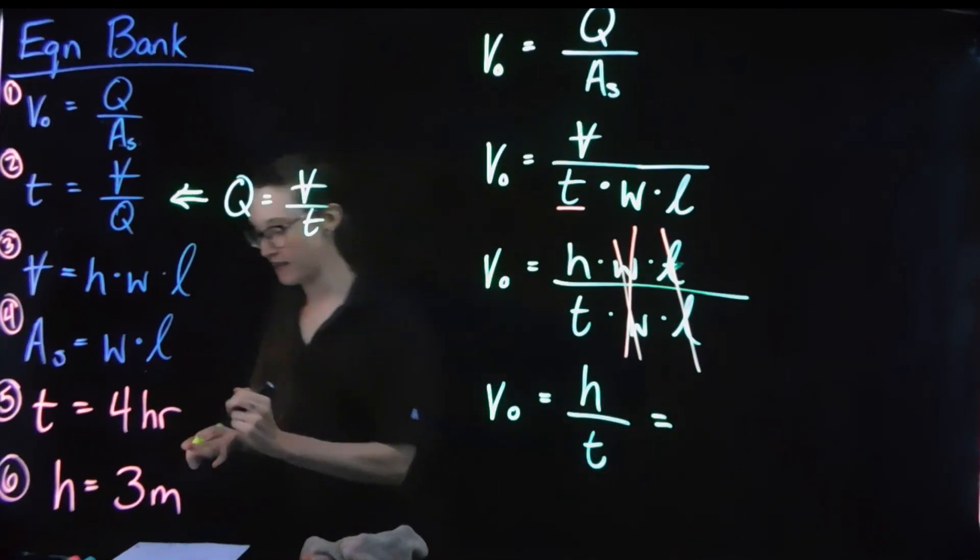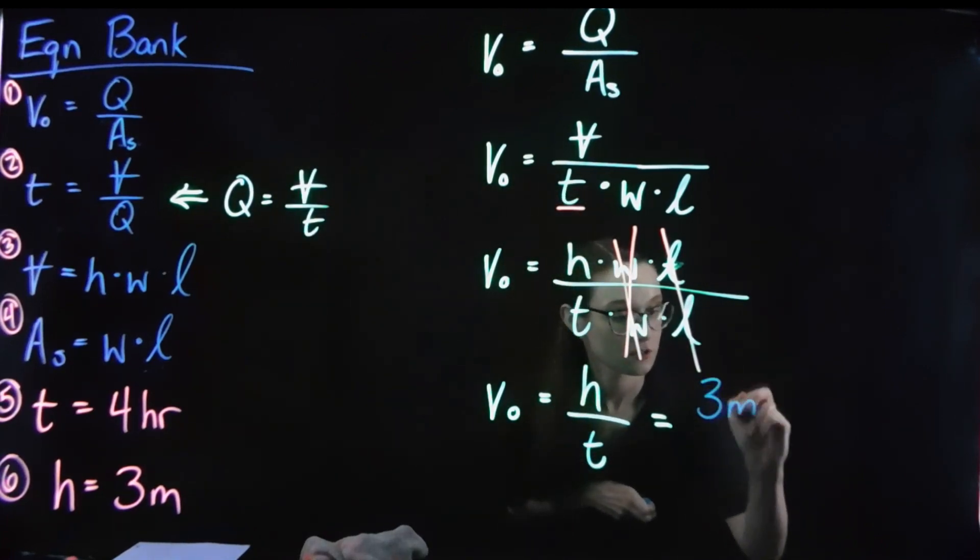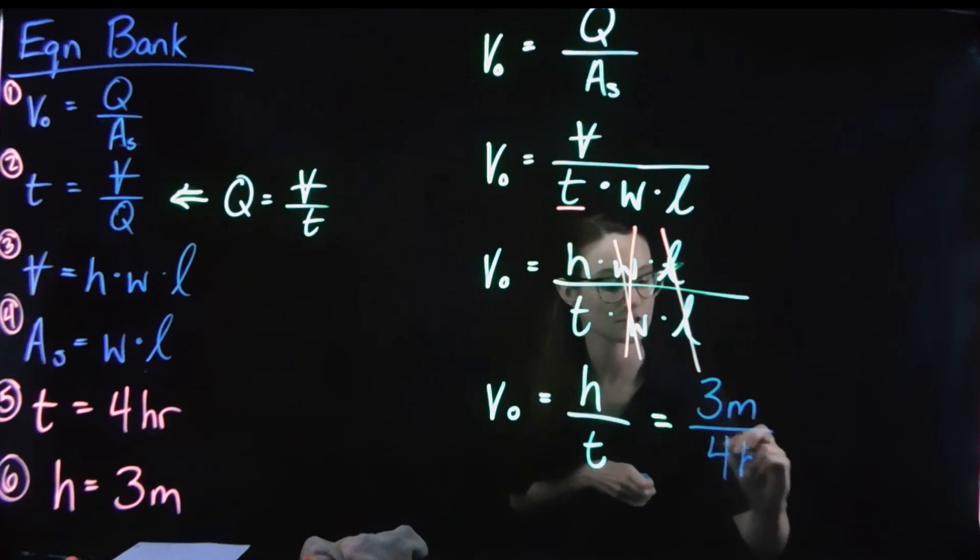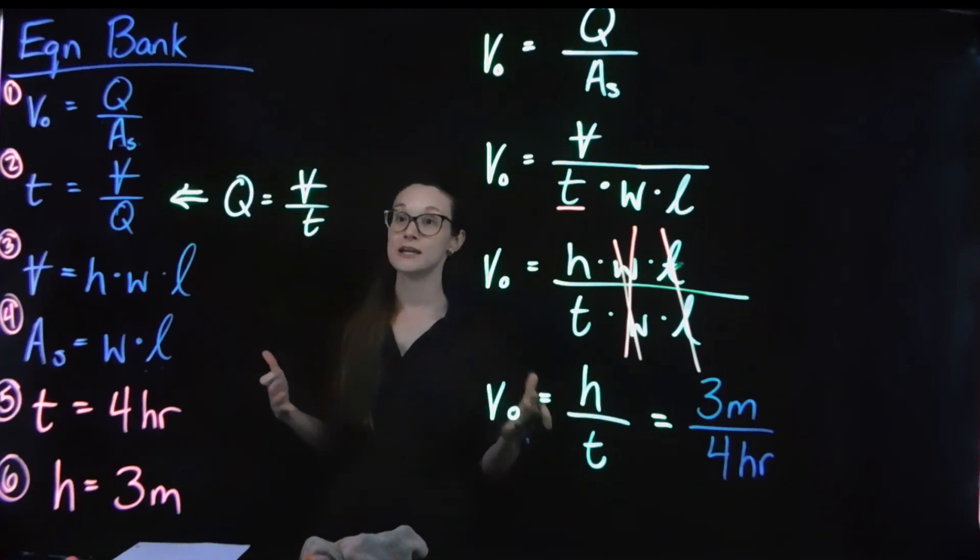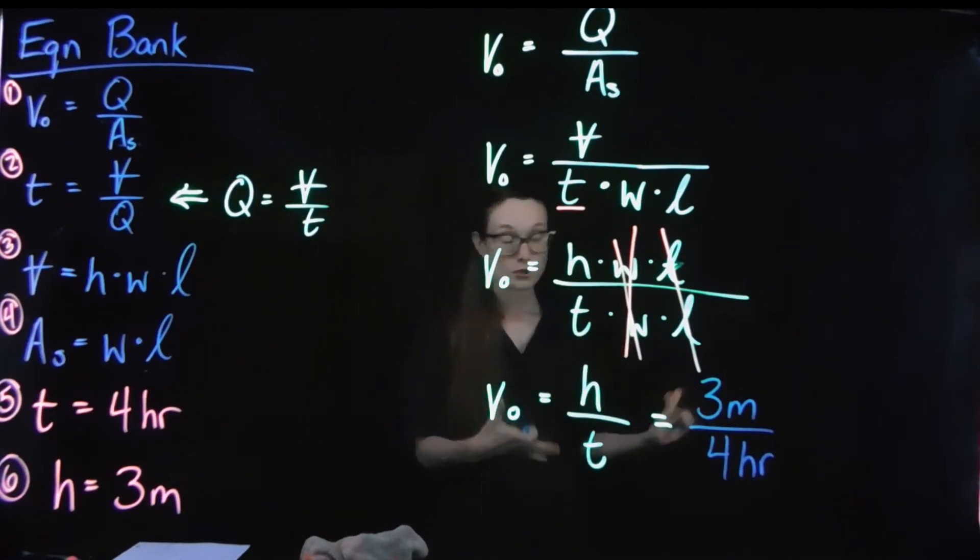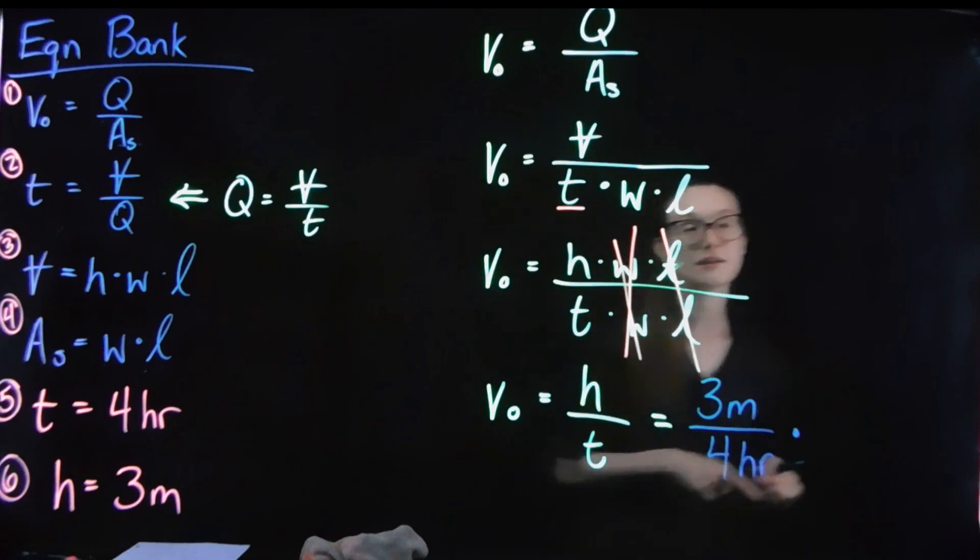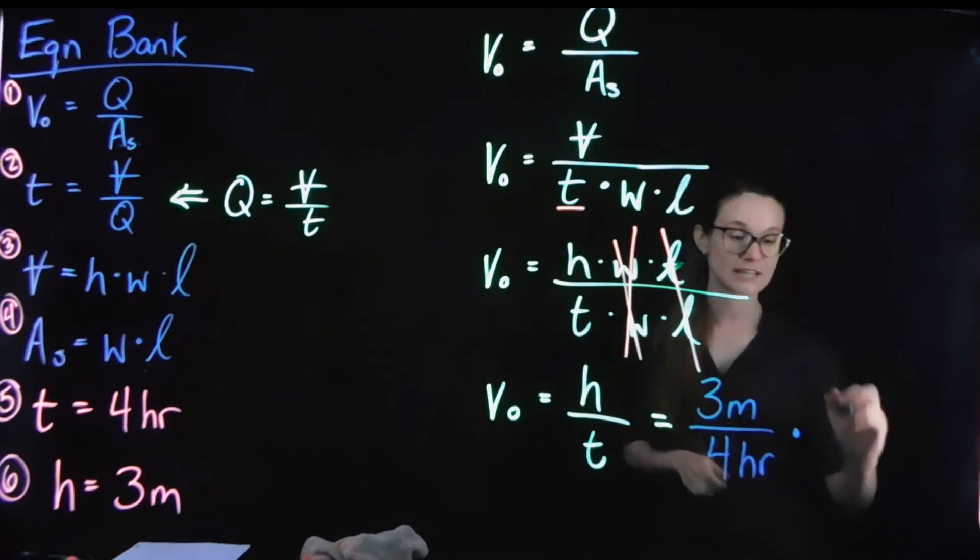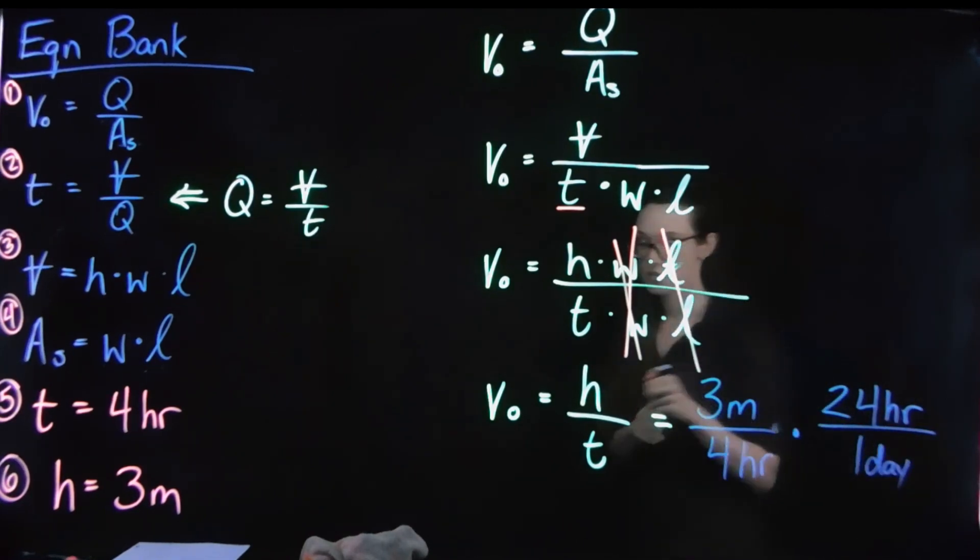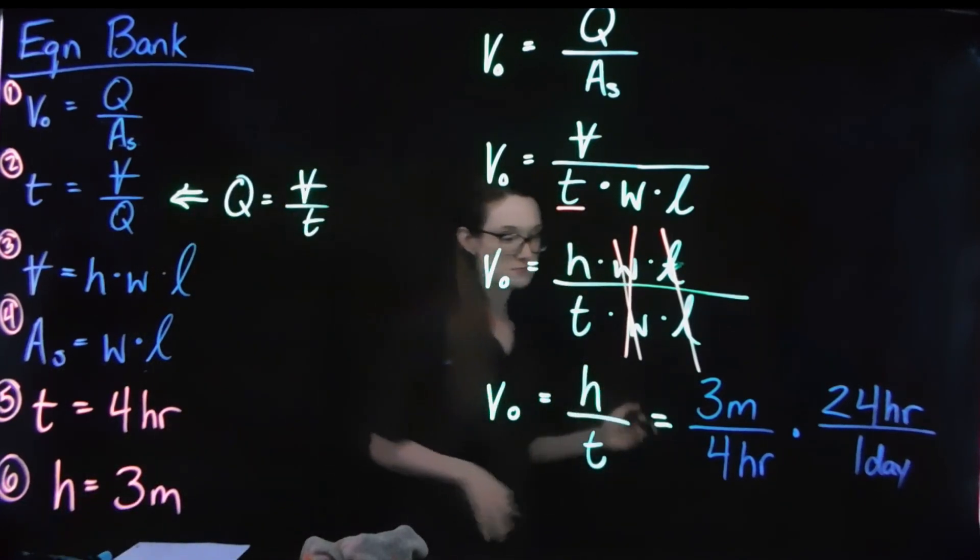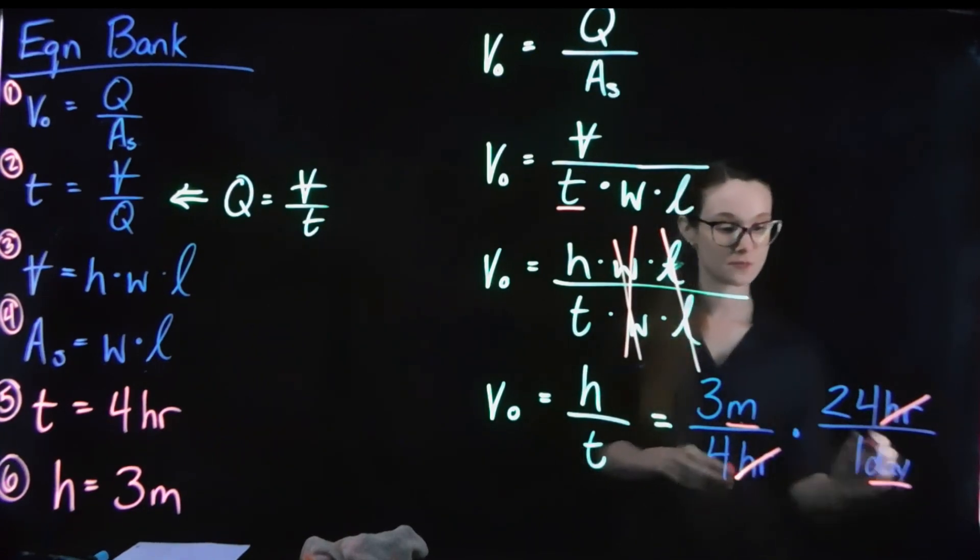When I plug in my values, switch colors just for consistency's sake, I have three meters divided by four hours. Now the standard way that we represent an overflow velocity is either in feet per day or meters per day. So I'm going to do a quick little unit conversion going way back to week two. The number of hours that I have in every day, 24.